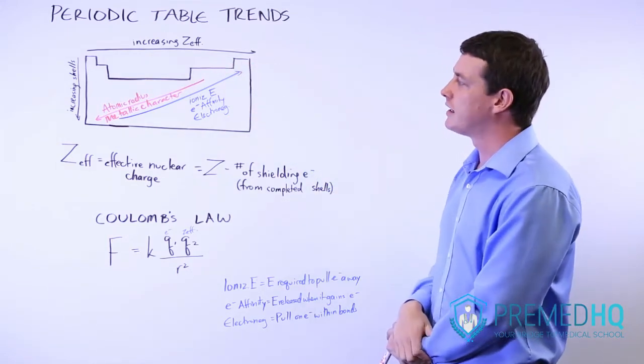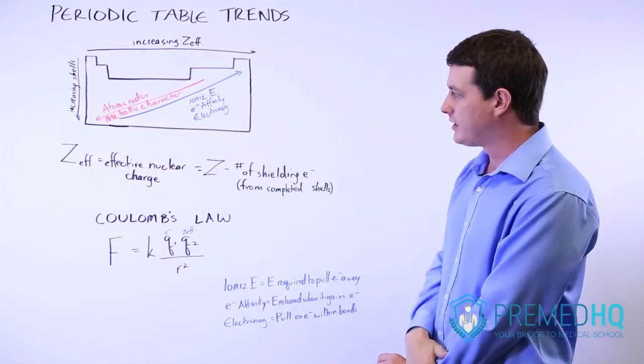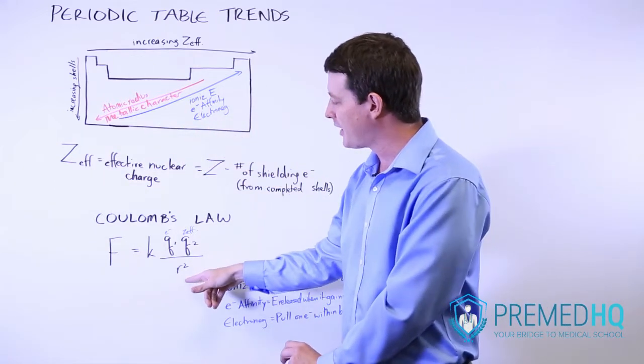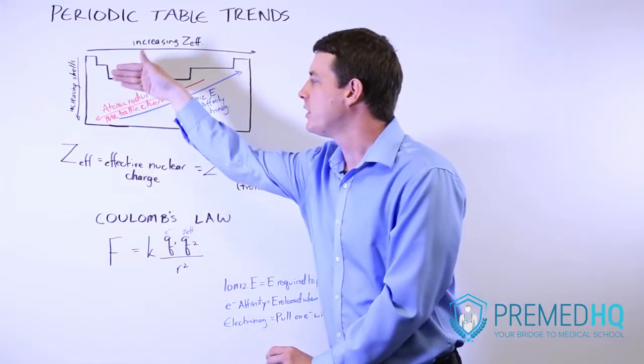There are two things that get greater as you move down and to the left. One of them is atomic radius. And the radius part is a bit complicated because we also consider radius in this formula here. But notice that we keep adding shells.